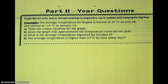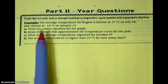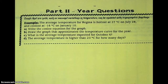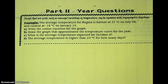If you open your booklet up to this example, we call these the year questions. Events that are cyclic, like seasonal variations in temperature, can be modeled with trig functions. Our example: the average temperature for Regina is hottest at 27 degrees Celsius on July 28th and coolest at negative 16 degrees Celsius on January 10th.